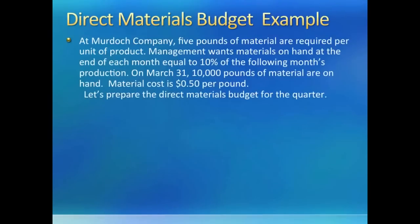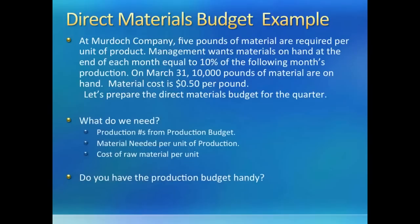For our Moldock company, it needs 5 pounds of raw material to make 1 unit. The company wants to have raw material on hand equal to 10% of next month's raw material needs. We are given beginning inventory for the quarter as well, and we know how much each pound of raw material will cost. Pause and think about how you will put the materials budget together.